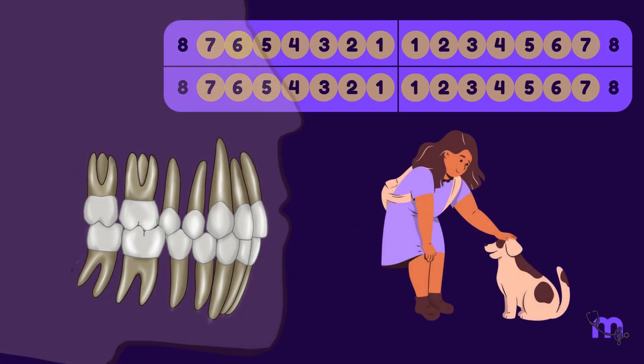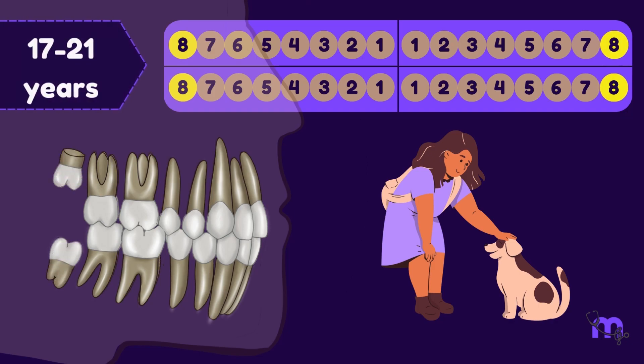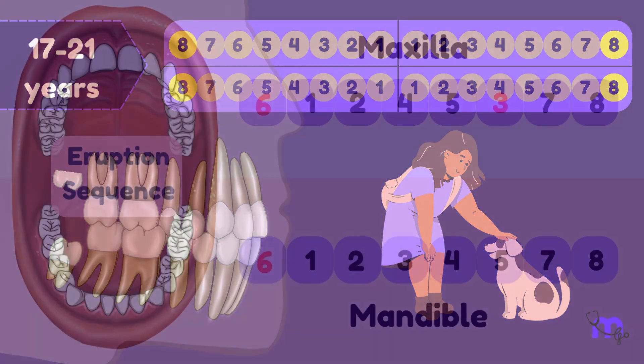Finally, in the late teens or early 20s, wisdom teeth show up between 17-21 years, marking a time of maturity and understanding. Therefore, the sequence of eruption is...